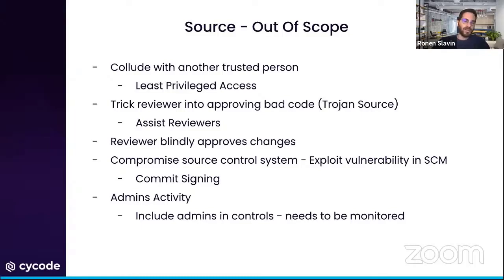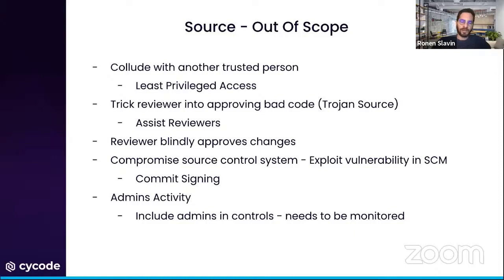Compromise of the entire source control system — for example, if you self-host source control and there's a vulnerability in the version you use — means the entire tool is controlled by an attacker. Commit signing at the developer level could serve as a mitigation. Admin activity is also out of scope: what happens if an owner or admin removes a restriction, pushes code, and then reinstates those restrictions? This should be complemented with other tools.